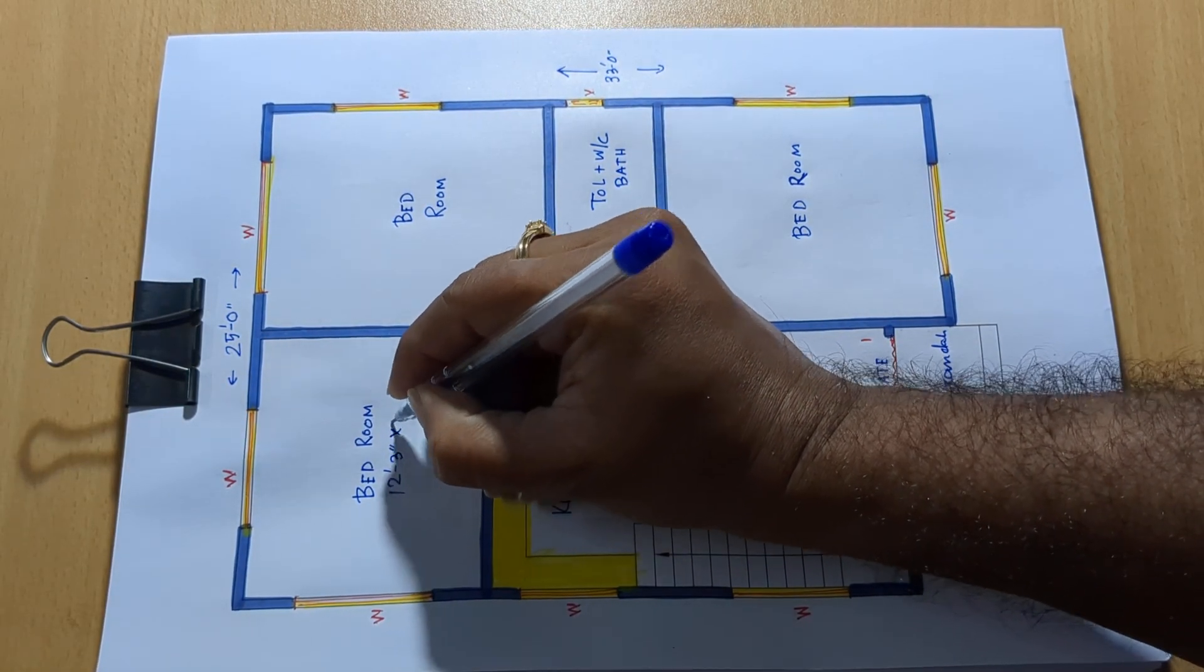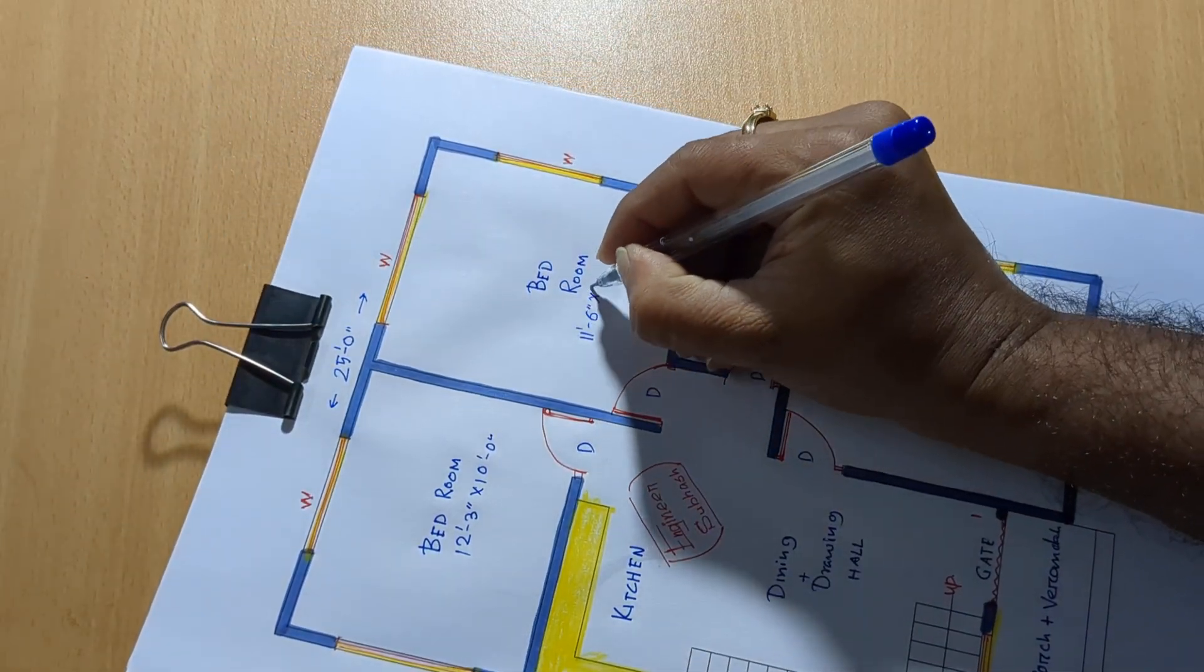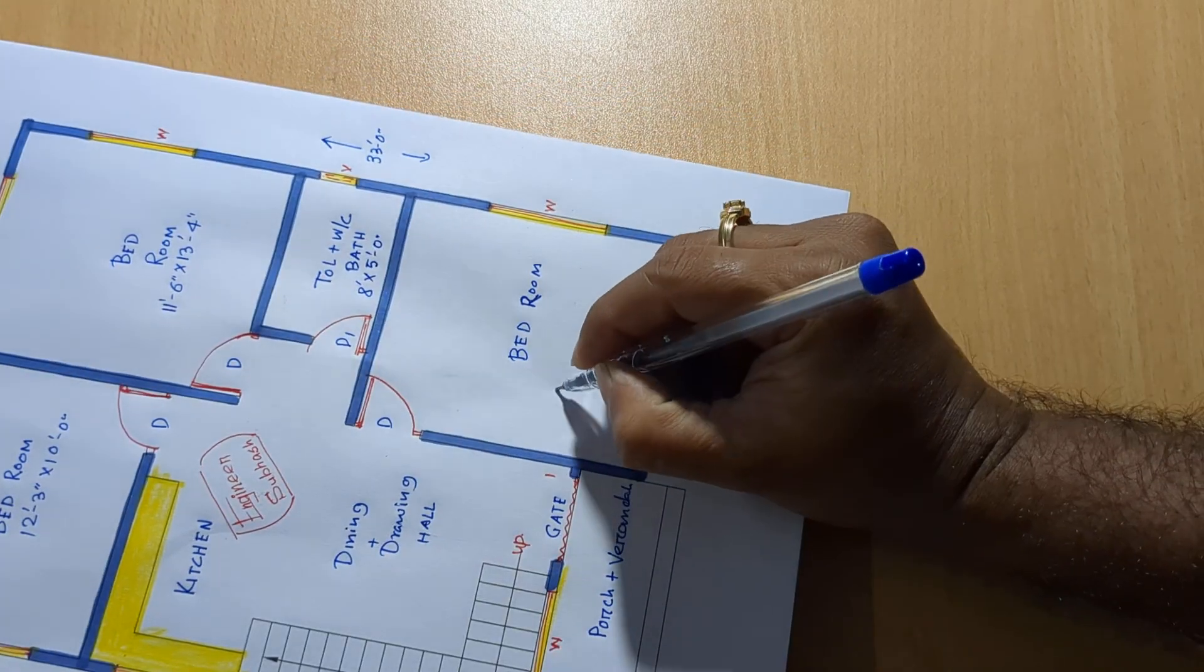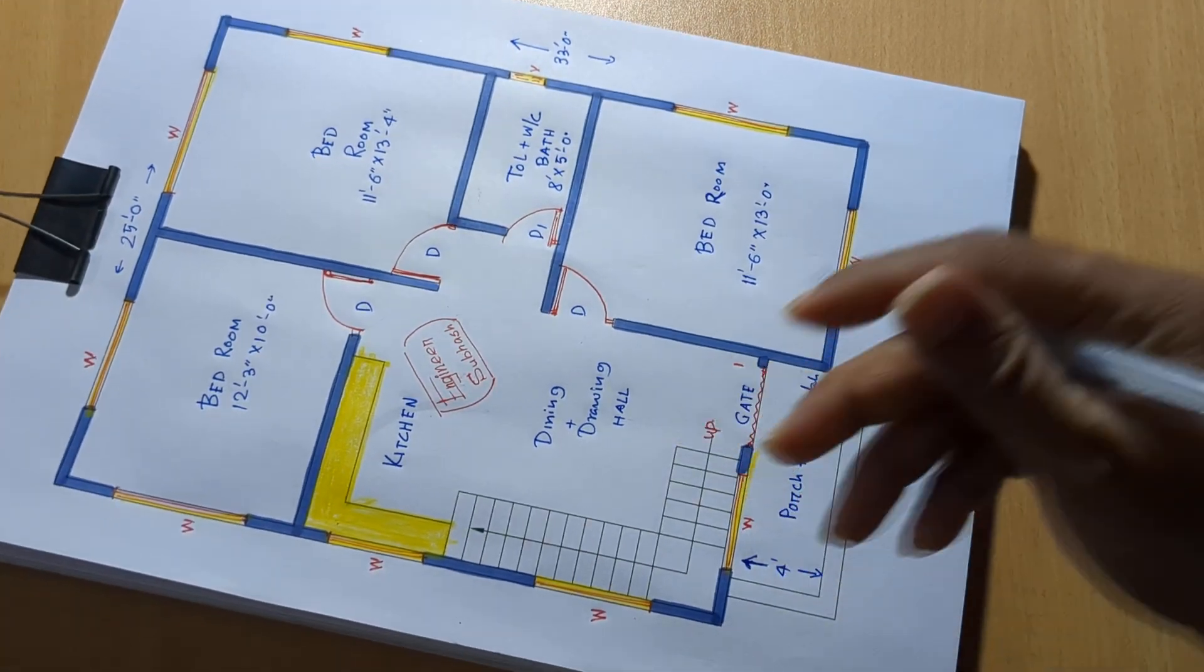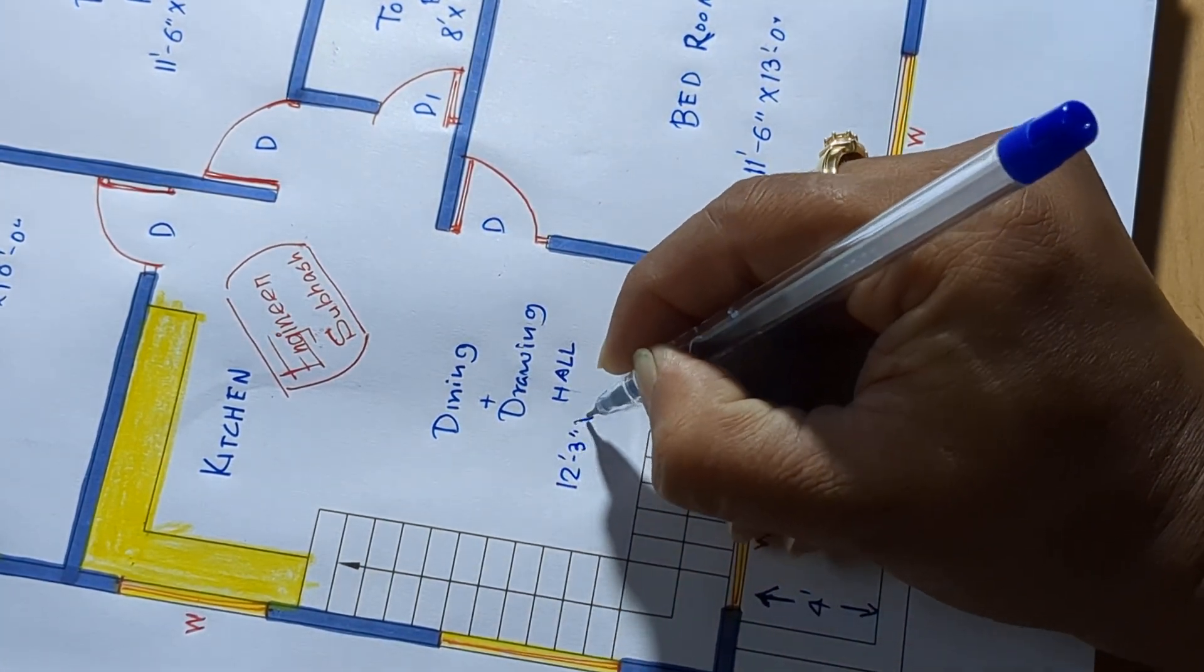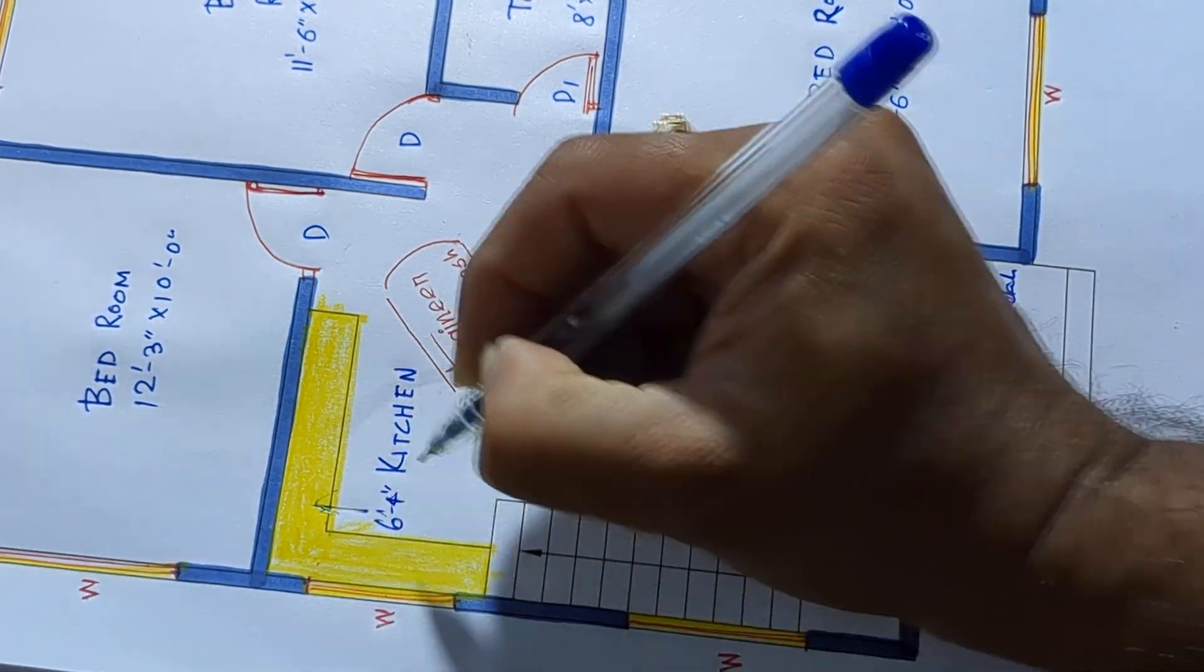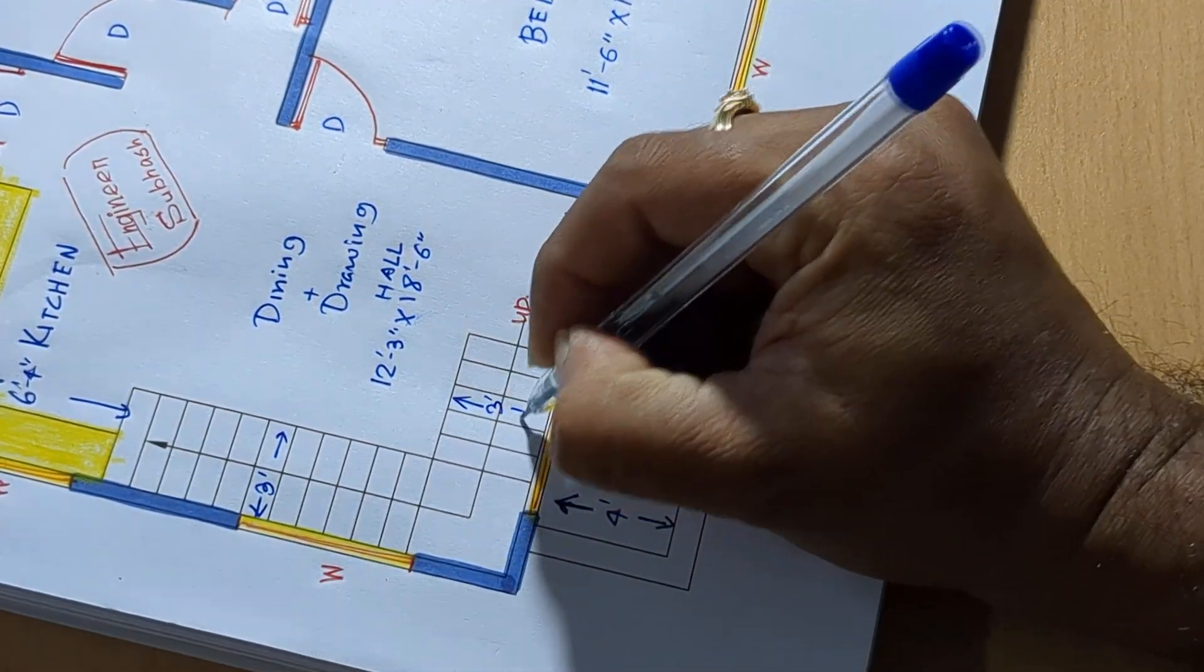12 feet 3 inch by 10 feet 0 inch. Next, 11 feet 16 by 13 feet 4 inch. 8 feet by 5 feet 0 inch, 11 feet 6 by 13 feet 0 inch. Next, 12 feet 3 inch by 18 feet 6 inch. 6 feet 4 inch, 3 feet wide, 3 feet wide.